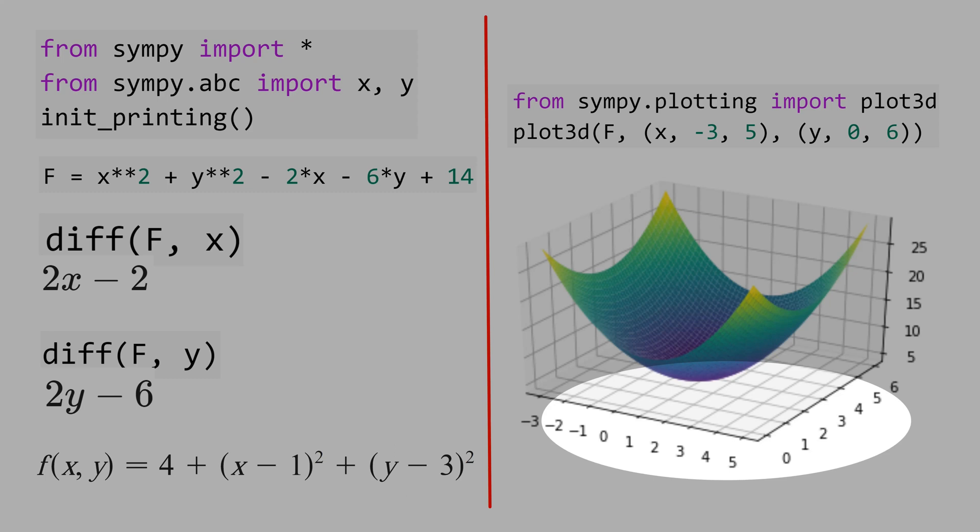You can see this in the chart. When x equals 1 and y equals 3, you have that f is equal 4. That's the minimum value.